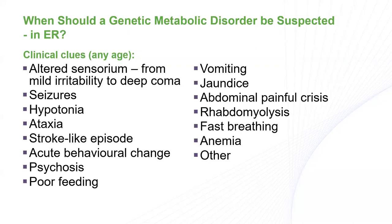When should we suspect IEM in an emergency setting? Clinical clues at any age — though at least the classical types tend to appear in the early part of life. Neurological presentations include encephalopathy with seizures, hypertonia, ataxia, stroke-like episodes, or acute behavioral psychosis. CNS abnormalities account for about 60 to 80% of all acutely presenting IEMs. Apart from CNS, there could be GI involvement, jaundice, liver disease, muscle, kidney, blood, or even cardiac manifestations.